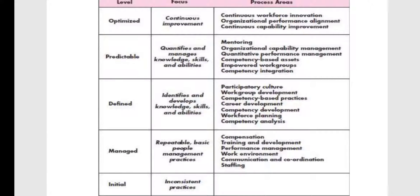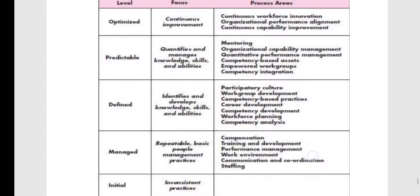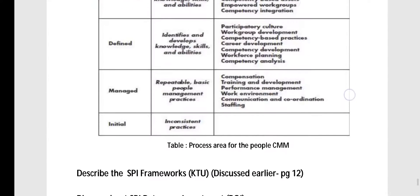People CMM also has five levels, almost identical to the previous model with just a little difference — the model is meant to be predictable. Each level has a specific focus, and the process areas are also mentioned for each level.